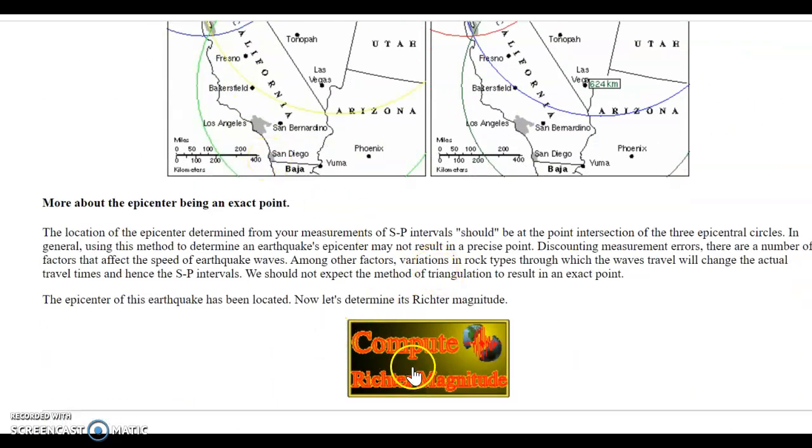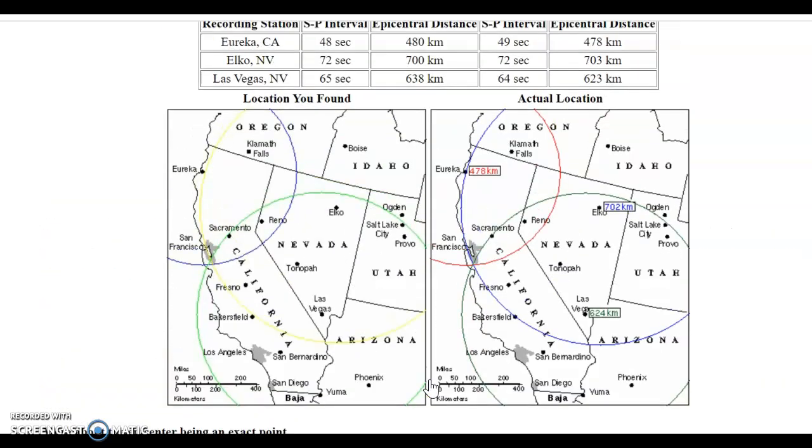The second part is to compute Richter magnitude. And before I go on to that, let's just think a little bit about what this means with these different sized circles. The epicenter is at the point. These lines are easier to see. I'm going to go ahead and use this. And it has a point where they all intersect.